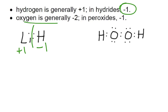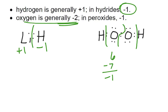Oxygen in its compounds is almost always minus 2, because it's usually the more electronegative atom. But if it has to combine with itself, it has to share. In hydrogen peroxide (H₂O₂), the oxygens get the electrons from hydrogen — oxygen normally has 6, but now it has 7, so instead of being minus 2, each oxygen is minus 1 in peroxide. Hydrogens, as normal, are plus 1. If oxygen is combined with fluorine, it would be in the plus 2 state, since fluorine is more electronegative and definitely gets the electrons.